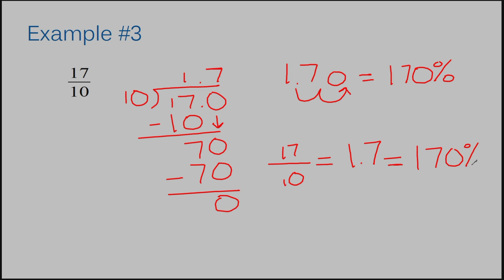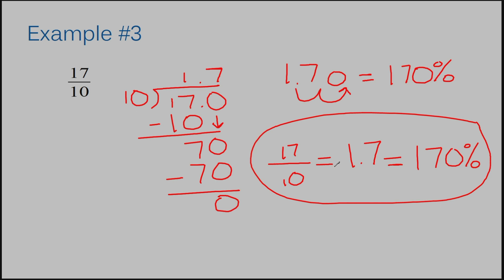I want to point out: please don't think that seventeen-tenths is only equal to one and seven-tenths because they're next to each other. Seventeen-tenths also equals one hundred seventy percent. All three of these are equal in value — it doesn't matter where they're positioned. This is sort of like saying: this is one dollar, this is four quarters, and this is ten dimes.